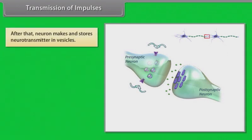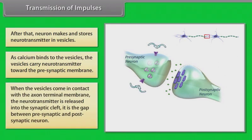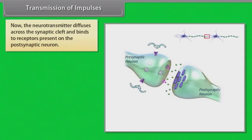The neuron makes and stores neurotransmitters in vesicles. As calcium binds to the vesicles, they carry neurotransmitters towards the pre-synaptic membrane. When the vesicles come in contact with the axon terminal membrane, the neurotransmitter is released into the synaptic cleft — the gap between the pre-synaptic and post-synaptic neuron.